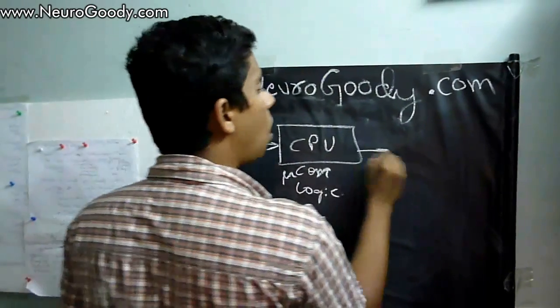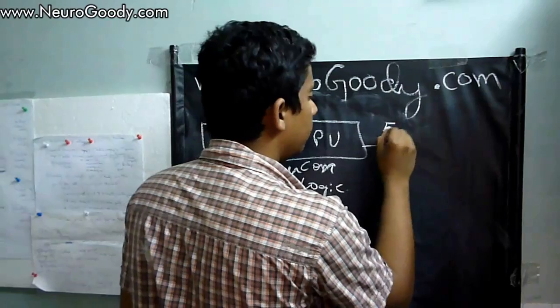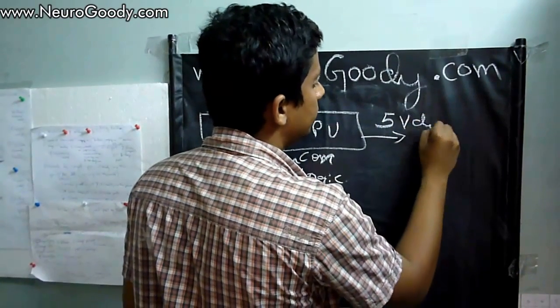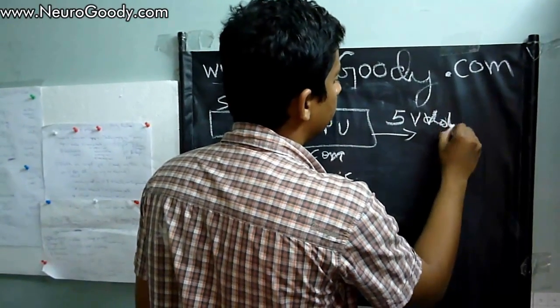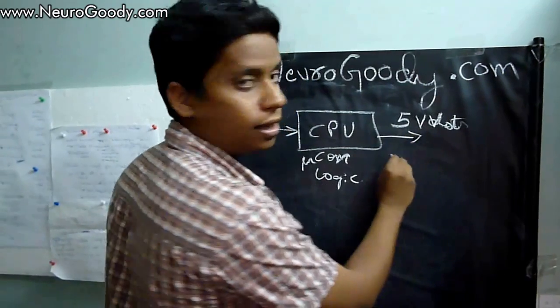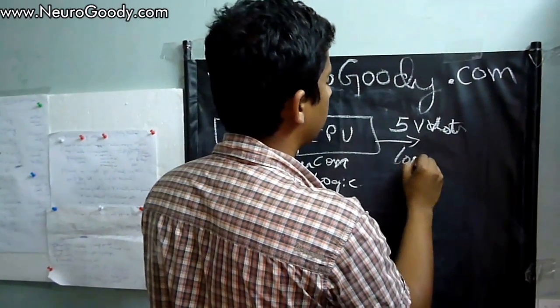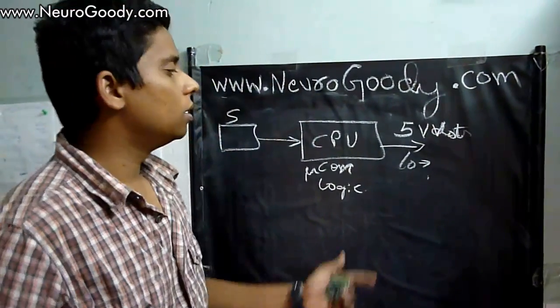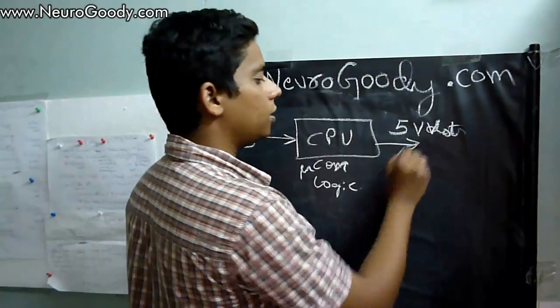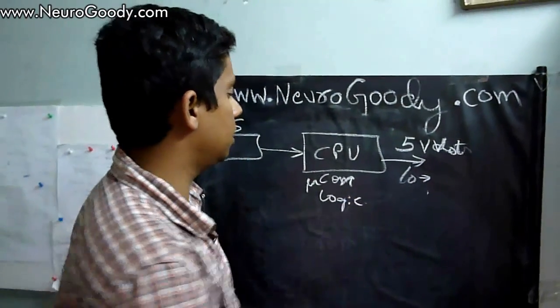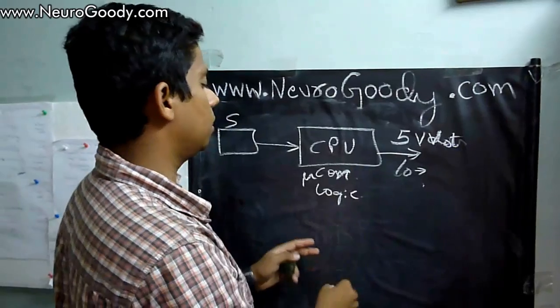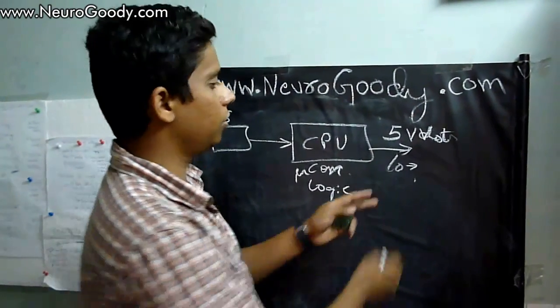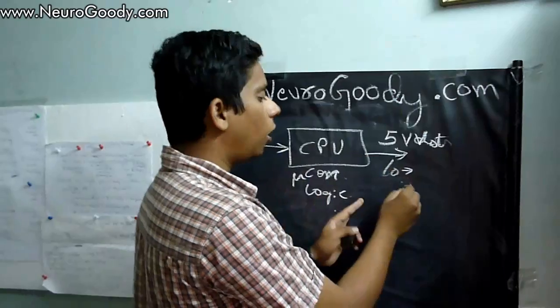And give you output which will be of 5 volt DC, right? 5 volt standard DC, or 0 volt for low. So the most important thing that you need to know here is the CPU, that is a microcontroller or a micro logical unit, will give you 5 or 0 volt of voltage.